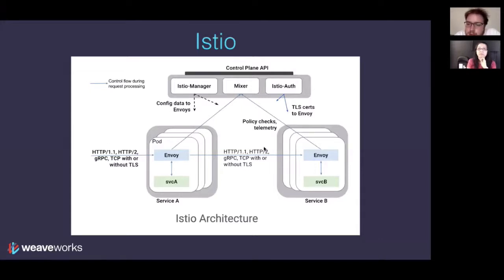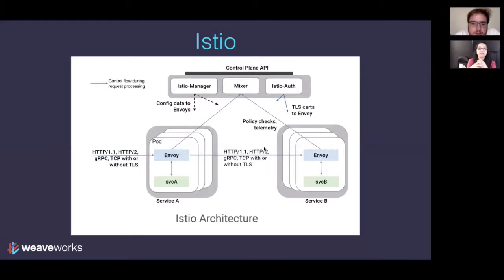Another question: would this work with microservice applications that communicate with RPC and persistent or long-lived connections between services? It says TCP on the slide, so any TCP connection should work. There's nothing in the architecture that would forbid long-lived connections from being proxied appropriately with Envoy and Istio.